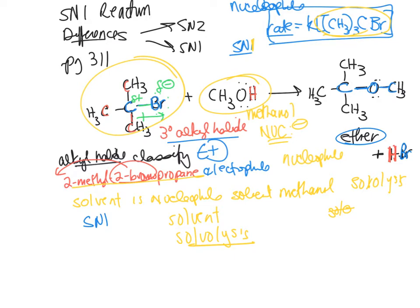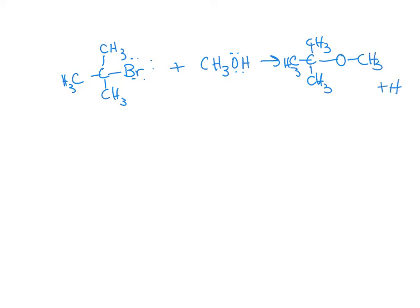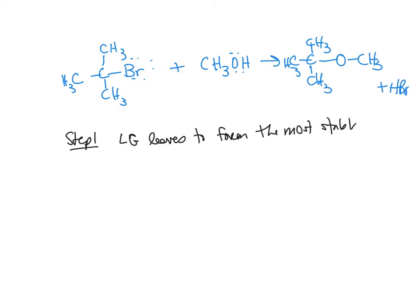The mechanism: in step one, the leaving group leaves to form the most stable carbocation. This is going to be very important — the most stable carbocation. A carbocation is a carbon bonded to only three things; it is an electron-deficient carbon with a formal positive charge.